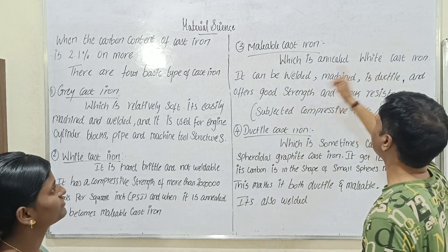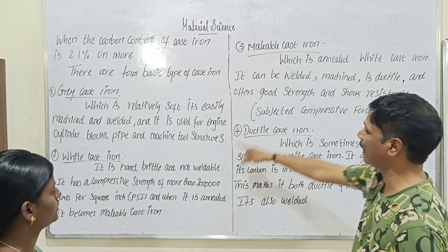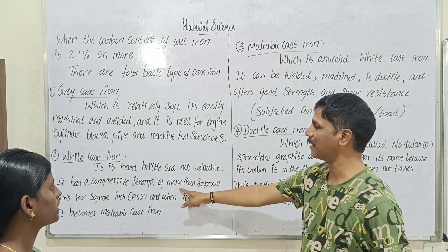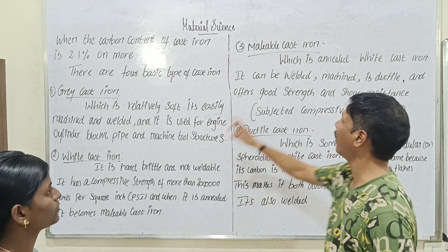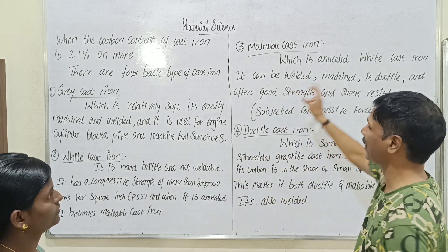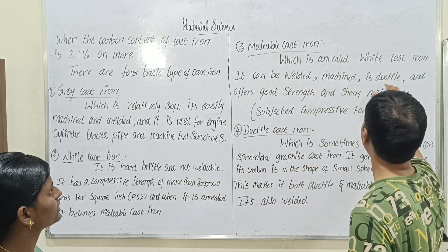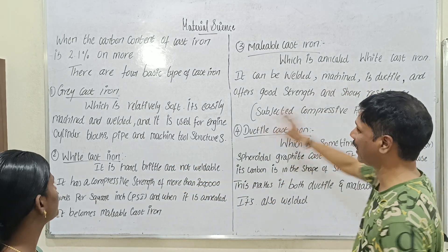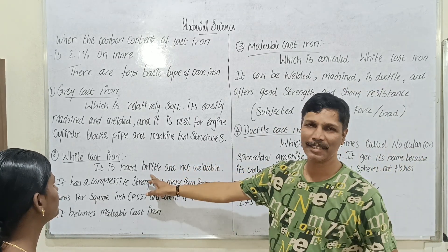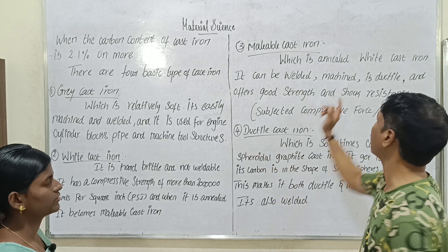Malleable cast iron is easily welded. But what is the problem? It is not weldable in its original brittle state. It is ductile. If you do annealing, it will not be brittle.